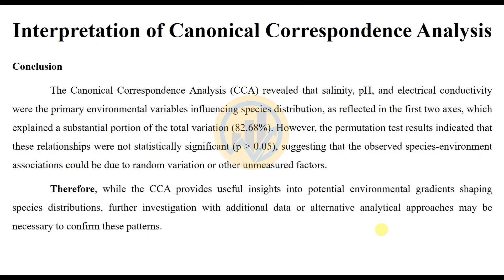In conclusion, the Canonical Correspondence Analysis revealed that salinity, pH, and electrical conductivity were the primary environmental variables influencing species distribution, as reflected by the first two axes which explained 82.68% of total variation. However, the permutation test results indicate those relationships were not statistically significant (p > 0.05), suggesting the observed species-environment associations may be due to random variation or unmeasured factors. Therefore, while the CCA provides useful insights into potential environmental gradients shaping species distributions, further investigation with additional data or alternative analytical approaches may be necessary to confirm these patterns.